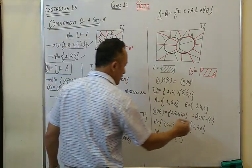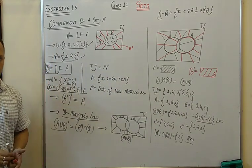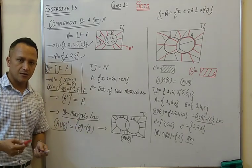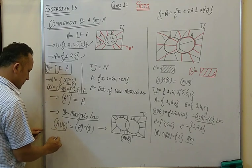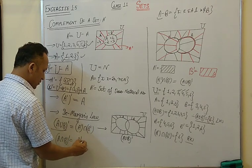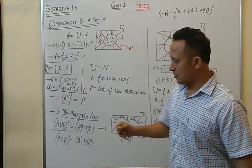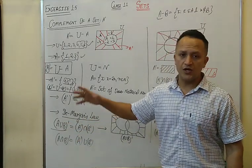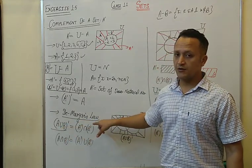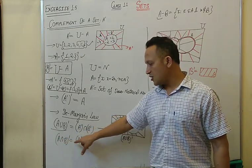So the left-hand side equals {6} and the right-hand side equals {6} — both are equal. This verifies that (A∪B)' = A' ∩ B'. Similarly, according to De Morgan's Law, (A∩B)' = A' ∪ B'.